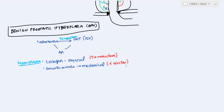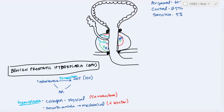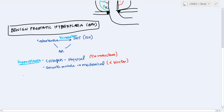When obstruction persists for a long time, it begins to affect the bladder. With the outlet blocked, you get hypertrophy of the detrusor smooth muscle of the bladder, which enlarges and can cause pain. When the bladder enlarges enough, you can get a false diverticulum — an outpouching of the bladder wall. It's called false because it involves all three layers.